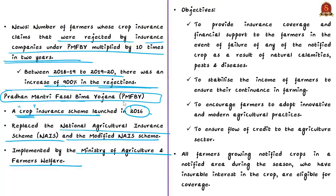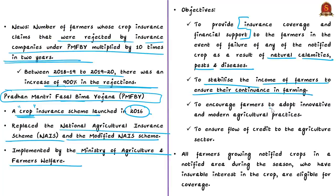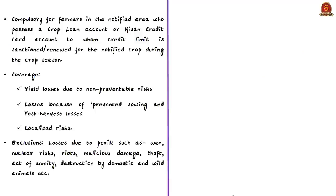The scheme's important objectives include providing insurance coverage and financial support to farmers in the event of failure of any notified crop due to natural calamities, pests, or diseases. Other objectives include stabilizing farmers' income to ensure their continuance in farming, encouraging adoption of innovative and modern agricultural practices, and ensuring flow of credit to the agriculture sector. All farmers growing notified crops in a notified area during a season who have an insurable interest in a particular crop are eligible for coverage. The scheme is compulsory for certain farmers — those in notified areas who possess a crop loan account or Kisan Credit Card account whose credit limit is sanctioned or renewed for the notified crop during the season.